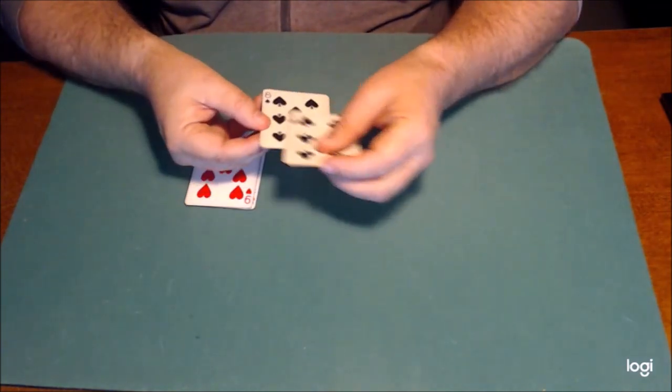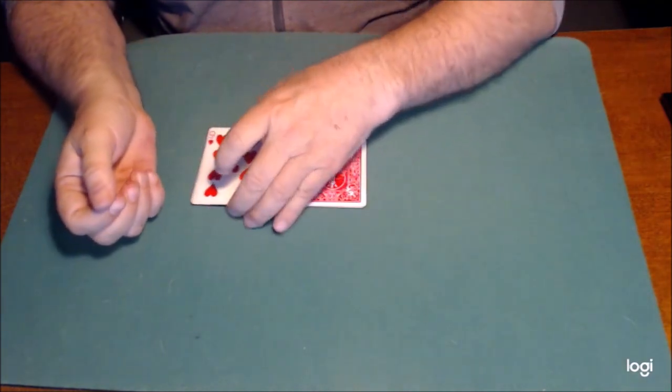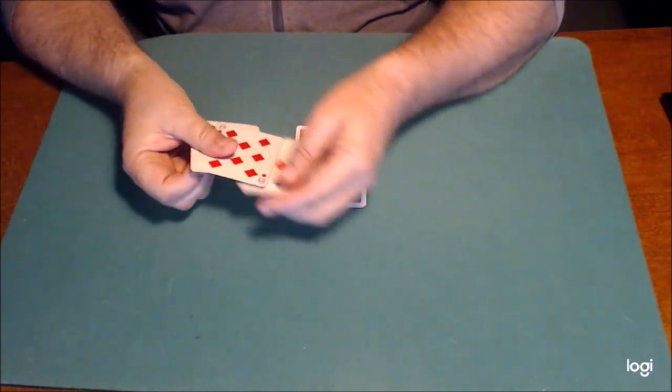What we have here are four black cards. Over here we have four red cards.